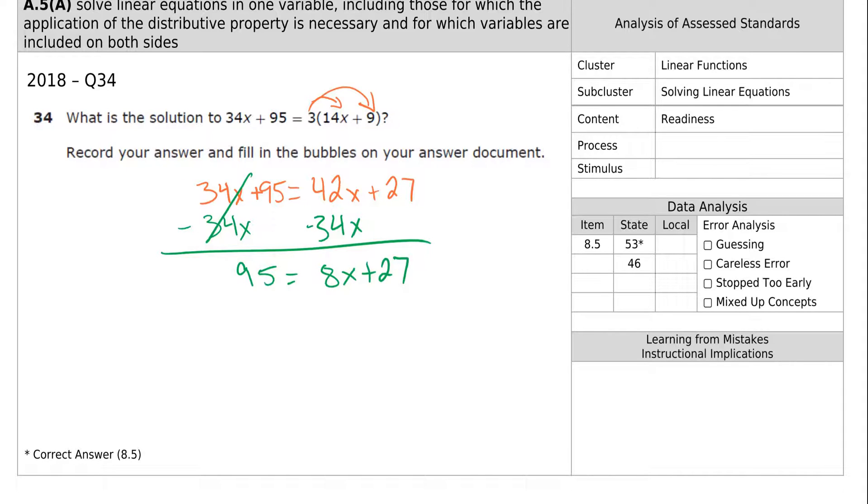95 is equal to 42 minus 34 is 8x plus 27. We've got the variable. We need to get this number to the other side. To do that, we get rid of the 27 by going minus 27, minus 27. 95 minus 27 is 68.